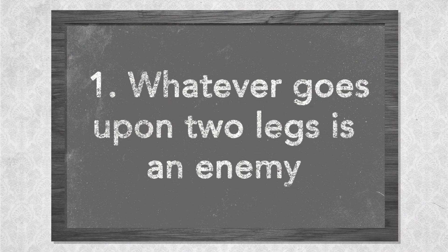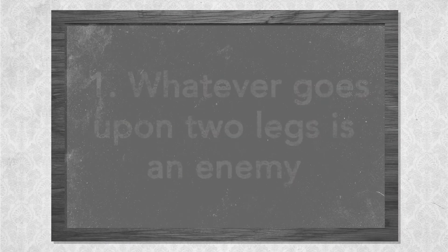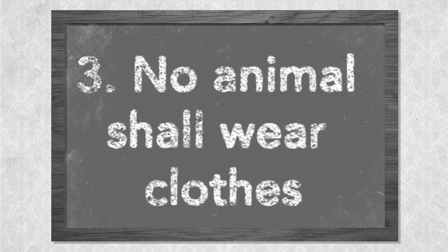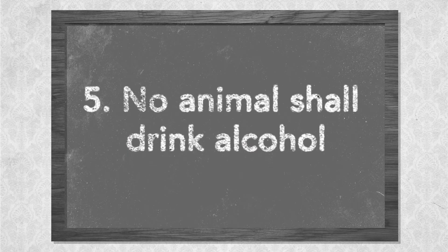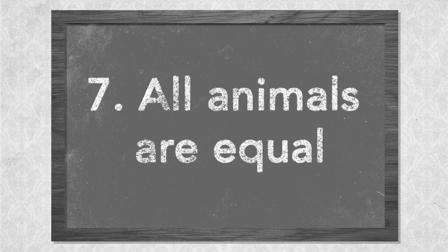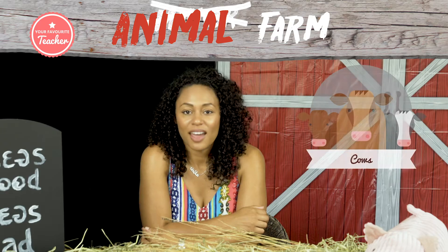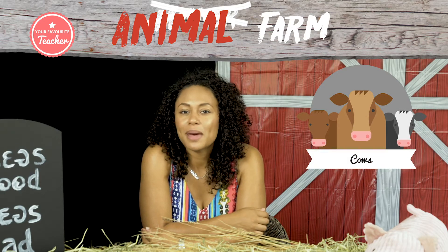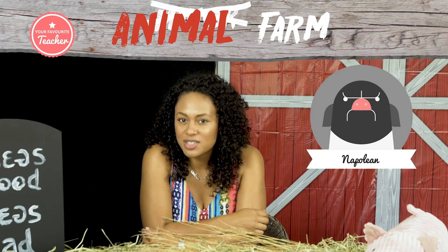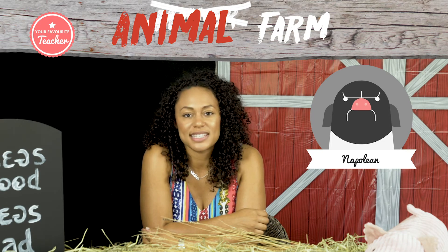The seven commandments are: one, whatever goes upon two legs is an enemy; two, whatever goes upon four legs or has wings is a friend; three, no animal shall wear clothes; four, no animal shall sleep in a bed; five, no animal shall drink alcohol; six, no animal shall kill any other animal; and seven, all animals are equal. The cows begin to get restless, so the pigs milk them before the animals go to explore the farm. Napoleon is left to look after the milk, but when the animals return, the milk has mysteriously disappeared.